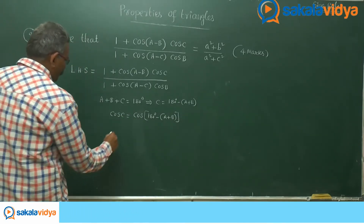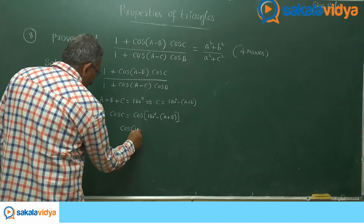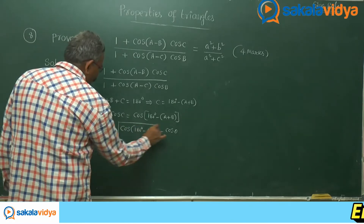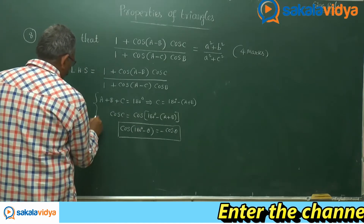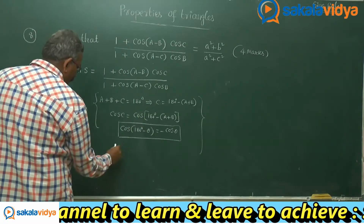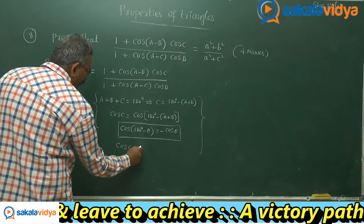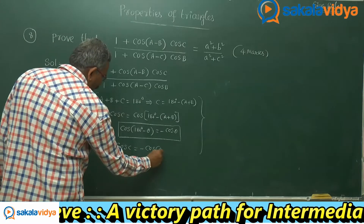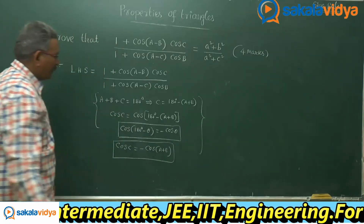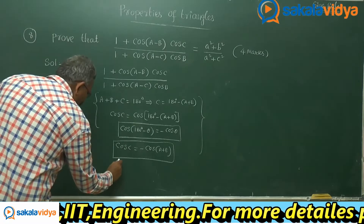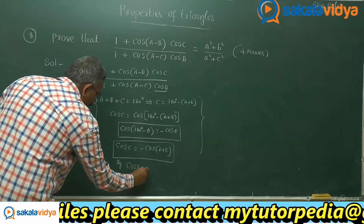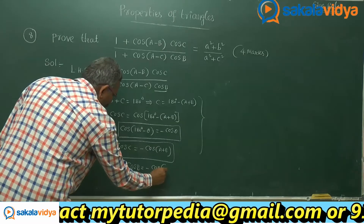The identity cos of (180 degrees minus theta) equals minus cos theta is very important. Using this, cos c can be written as minus cos of (a plus b). Similarly, cos b can be shown to equal minus cos of (a plus c).